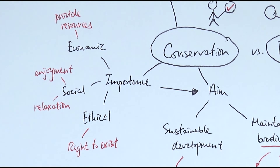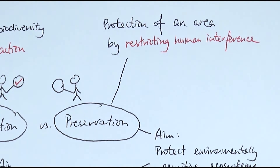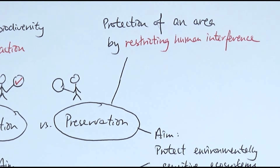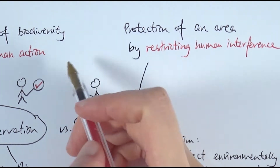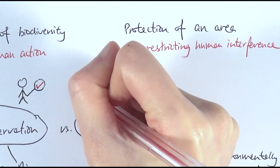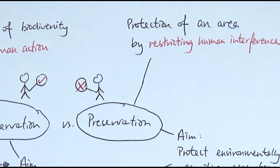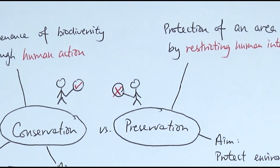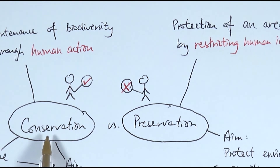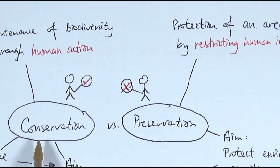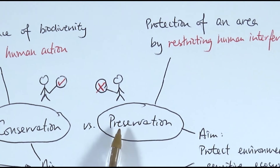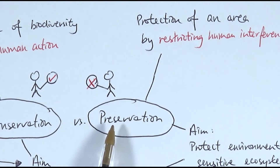And that is conservation. Now we'll have a look at preservation. Preservation refers to the protection of an area by restricting human interference — we don't want humans to enter that particular area. The difference is that conservation wants people to be actively involved in maintaining biodiversity, whereas preservation is about avoiding human contact.